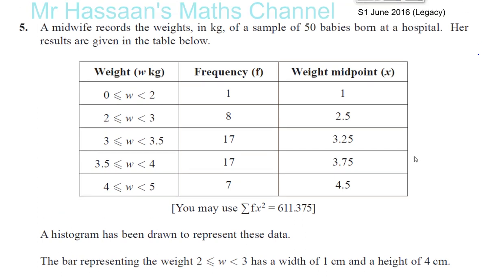Now it says a midwife records the weight in kilograms of a sample of 50 babies born at a hospital. Her results are given in the table below. So you've got the weights and categories and group frequency. You've got the frequencies and you've got the midpoint of the weights. We've also told you that the sum of the frequency times the square of the midpoint is equal to this value, which should come in later on anyway.